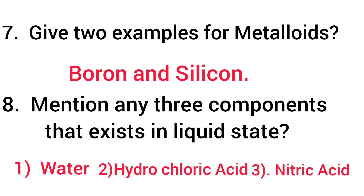Seventh question: give two examples for metalloids. Boron and silicon. Eighth one: mention any three components that exist in liquid state. Water, hydrochloric acid, and nitric acid.